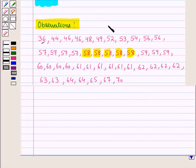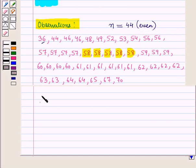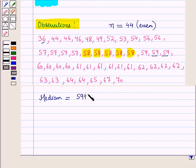The number of observations n is equal to 44, which is even. The median is equal to the average of the 22nd term and the 23rd term, which equals (59 + 59) / 2 = 118 / 2 = 59. So the median Q is 59.